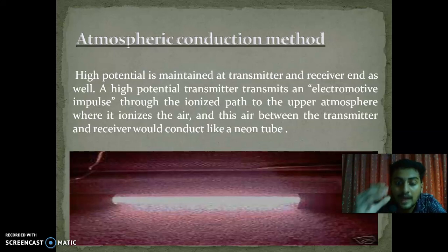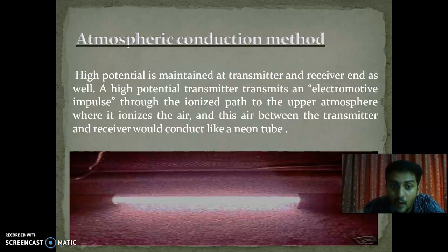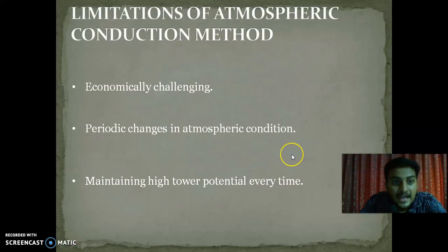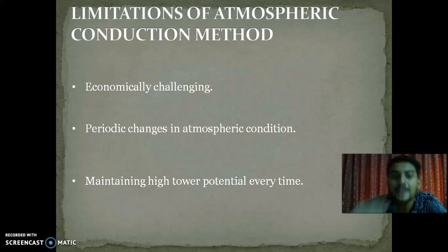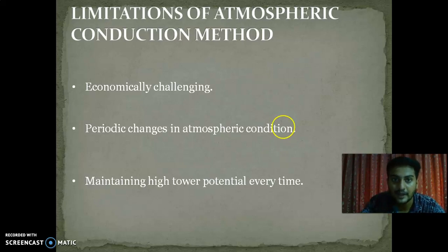Without a conducting medium or conductor, the electricity will pass through the ionized path provided in the air. The transmitter transmits an electromotive impulse that creates an ionized path to the upper atmosphere where it ionizes the air, providing the medium for electricity to pass. The limitations of atmospheric conduction method are: it is economically challenging, and the periodic changes in atmospheric conditions make maintaining high tower potential difficult every time.